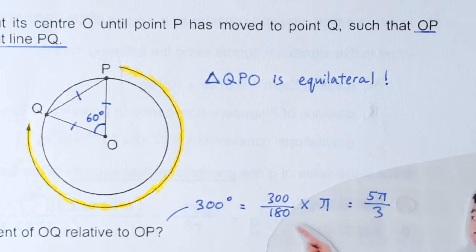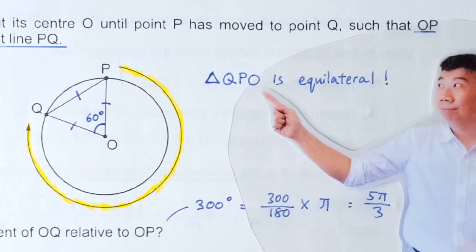So the last thing we need to do is to convert degrees to radians. Alright, easy. Ta-ta!